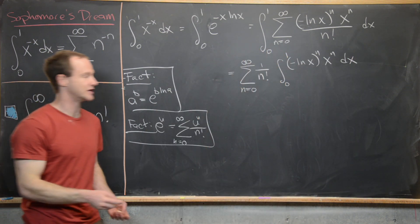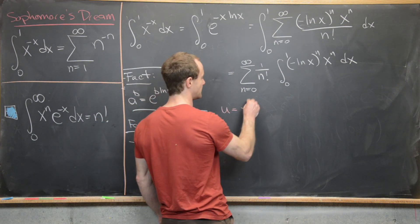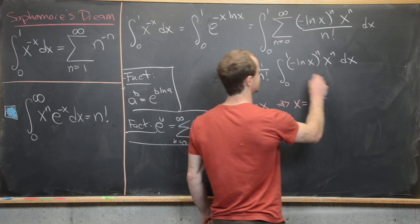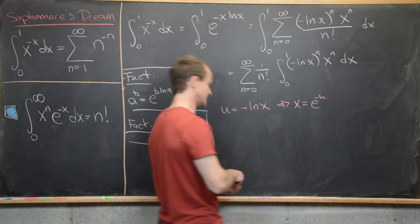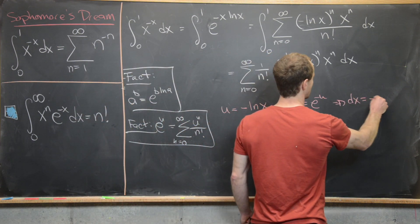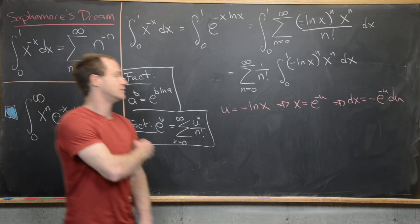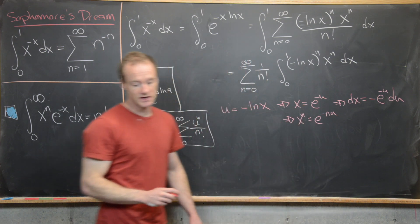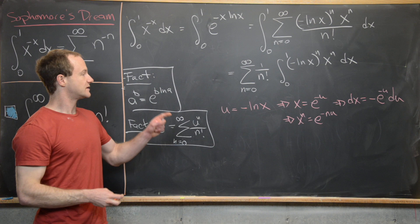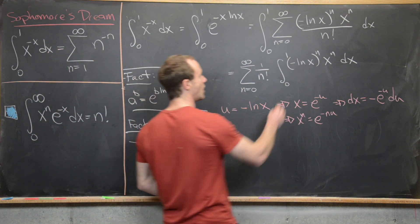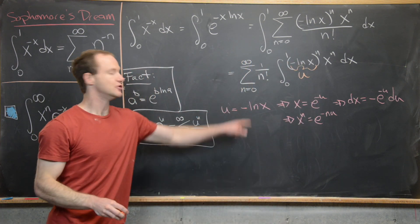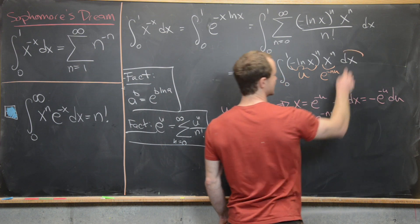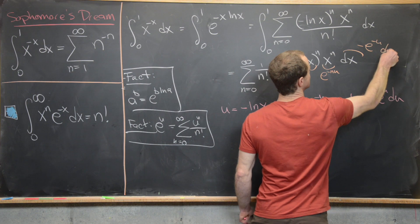We make the substitution u equals minus natural log of x. This means x equals e to the minus u, so dx equals minus e to the minus u du. Also, x to the n equals e to the minus n times u. The minus natural log of x terms become u to the n, the x to the n term becomes e to the minus n u, and dx becomes minus e to the minus u du.